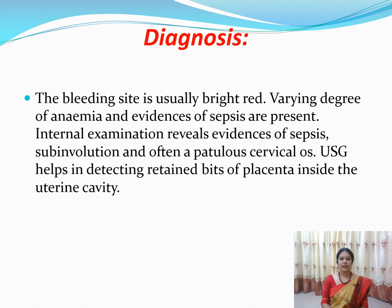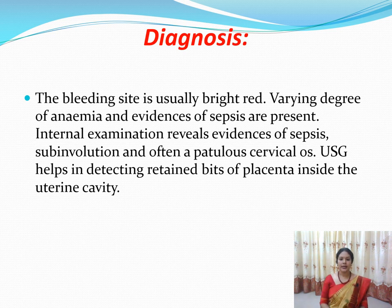Diagnosis of secondary PPH: the bleeding is usually bright red (normal lochia is dark brown). Bright red bleeding should raise suspicion of secondary PPH. Check for evidence of anemia and sepsis or infection. Perform an internal examination for fresh bleeding and assess the lochia — vaginal discharge in the first fortnight after delivery — for offensive smell or abnormal appearance, which suggests infection. Sub-involution of the uterus should be assessed, and ultrasonography can identify retained bits of placenta in the uterine cavity.